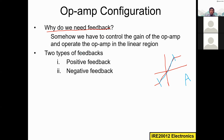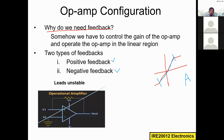There are two types of feedback. One is called positive feedback and another one is called negative feedback. Positive feedback means we are feeding back the output to the positive input terminal, which is the non-inverting input terminal. That is why we call this positive feedback. However, this is a really unstable configuration. In practical circuits, we almost never use this kind of feedback because the circuit will be unstable.